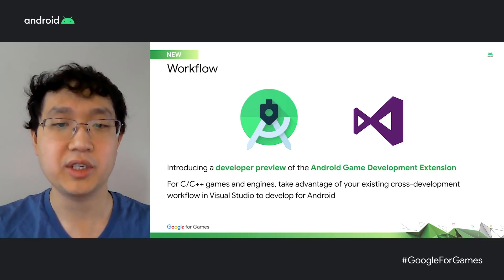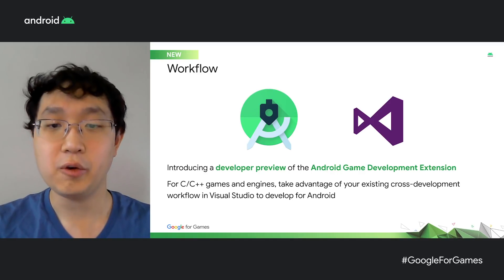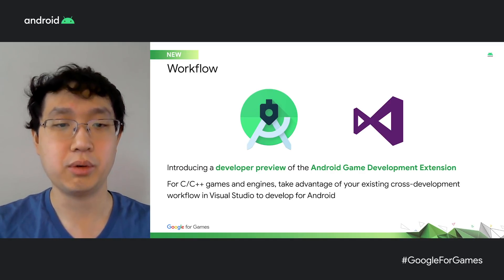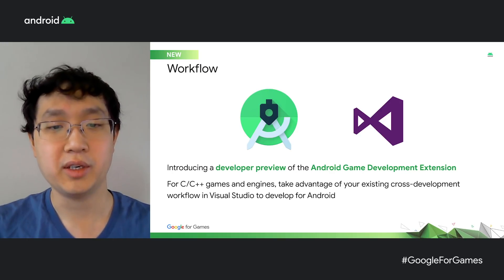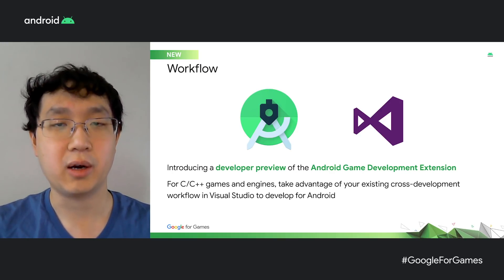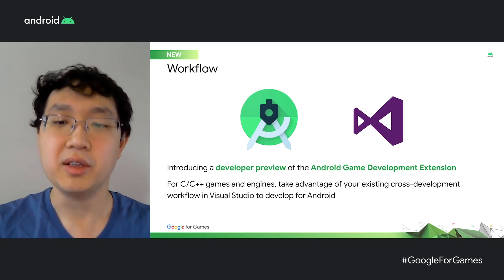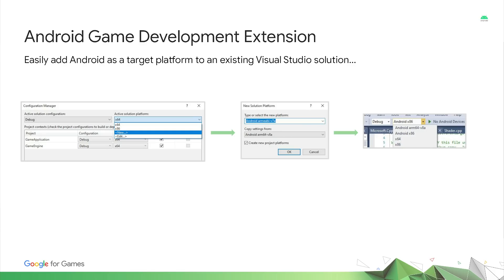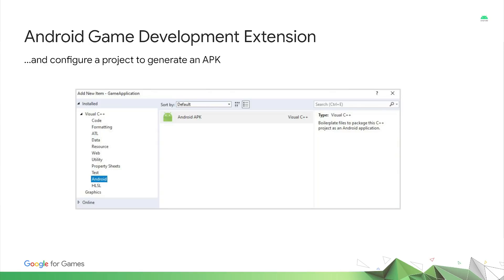To solve that, today we're excited to announce a developer preview of the Android Game Development Extension, allowing you to use your existing Visual Studio workflow to create Android games. We've been working on this since last year, and we want to thank our early preview partners — such as Blizzard, EA, Ubisoft, and Epic — for taking the time to iterate with us on our journey. Once you install the extension, you can easily add Android as a target platform in your existing Visual Studio solutions in the configuration manager, and easily configure your project to generate an APK, with the extension adding all the necessary boilerplate files.